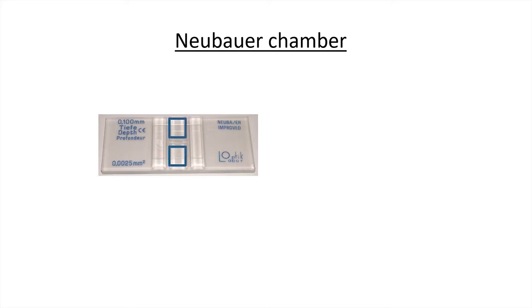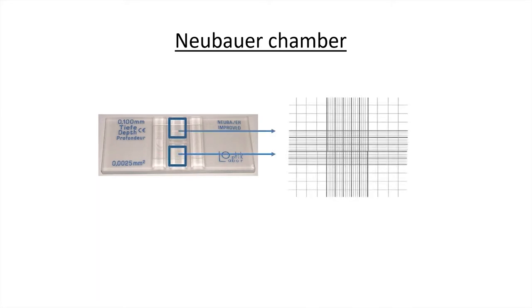The grid in the central area of the chamber allows us to count the number of cells. Seeing it under the microscope, this grid looks like a cross in which nine squares can be distinguished, the most important of which are the central square and the four lateral squares.